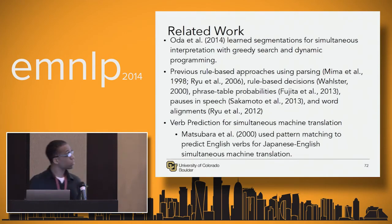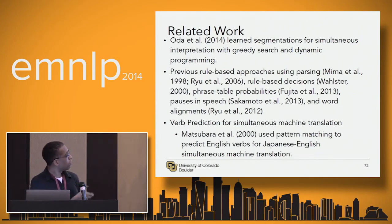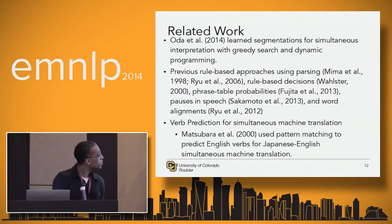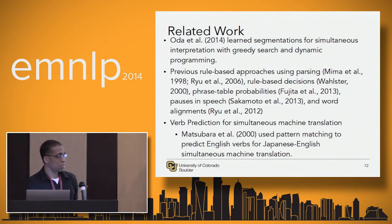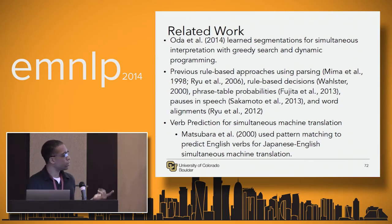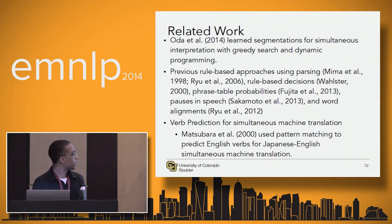Just a few words about related work. There was a paper by Oda et al. in 2014 where they learned segmentations using search and dynamic programming. We used reinforcement learning and verb prediction. There were some previous attempts at simultaneous machine translation in the 90s, and more recently as well. But there haven't been any attempts at verb prediction recently — the only one we're aware of was by Matsubara et al., a rule-based system using pattern matching to predict the English verb.